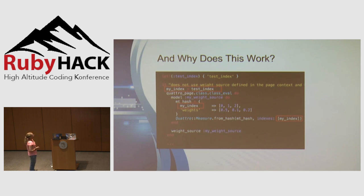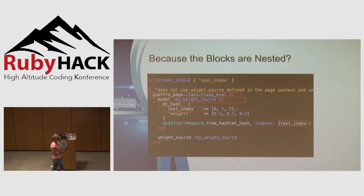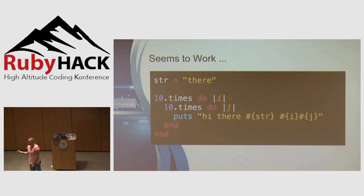In order to figure out what was going on, I came up with a differential diagnosis. The first theory was that maybe you can't use a variable defined outside the scope of nested blocks inside the innermost nested block — too many blocks. But I quickly came up with an example showing that defining a variable and using it inside two nested calls works fine in general.